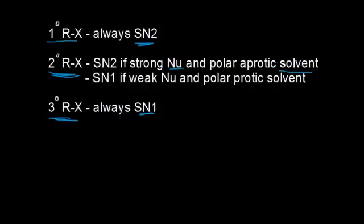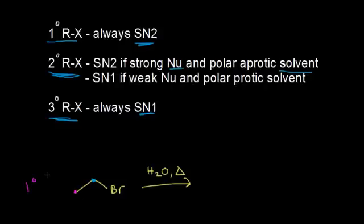Let's do a bunch of examples and see how to use this chart. Starting with this alkyl halide, we're going to react it with water and heat the reaction. The first thing you do is look at the structure of your alkyl halide. This carbon is bonded to the bromine and connected to one other carbon, so this is a primary alkyl halide. Primary alkyl halides are always SN2, so this is going to proceed via a concerted SN2 mechanism.